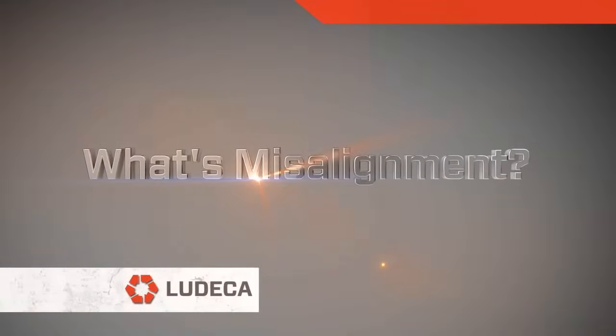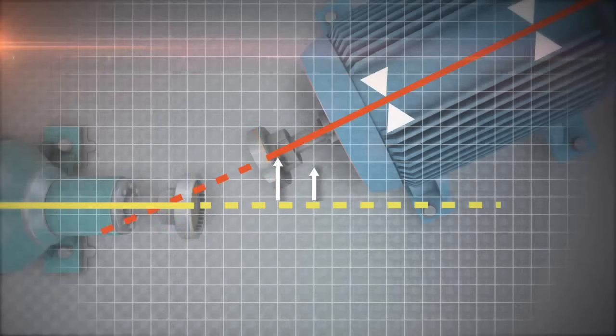What is misalignment? Misalignment means you have too much offset and angularity between two shaft center lines of rotation.